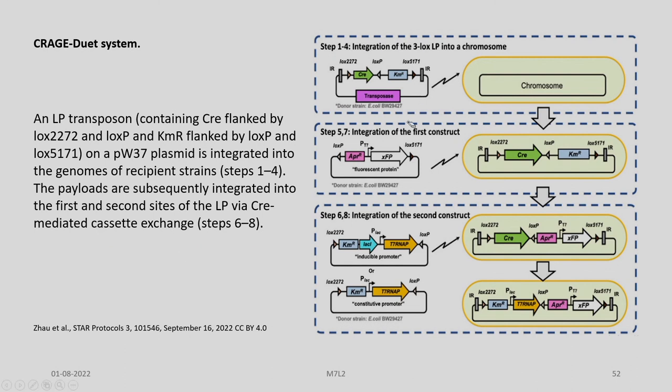Steps 1 to 4 comprise integration of the 3-lox landing pad into a chromosome; steps 5 to 7 contain integration of the first construct; and steps 6 to 8 involve integration of the second construct.